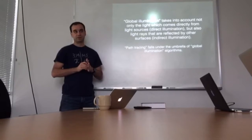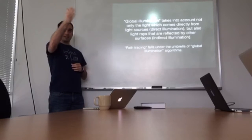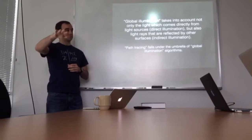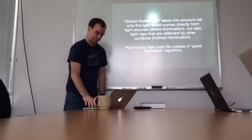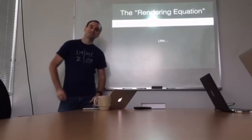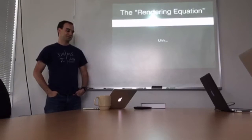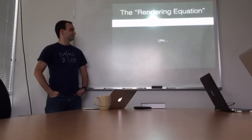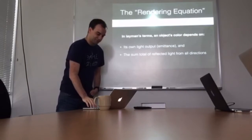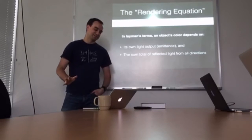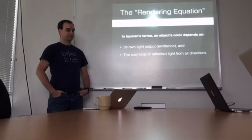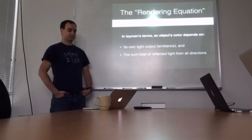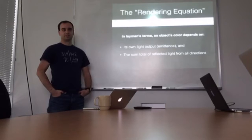Global illumination basically means it considers not only direct lighting in the scene, but also indirect lighting. So if there's a blue wall and some sunlight is hitting it, it's going to provide a blue tint to other objects in the room. This rendering equation was developed in 1986, so it's fairly modern. All it's really saying is that the color of an object depends on two things: its own emittance if it's a light source like the sun, and the sum total of all light reflected from all directions.